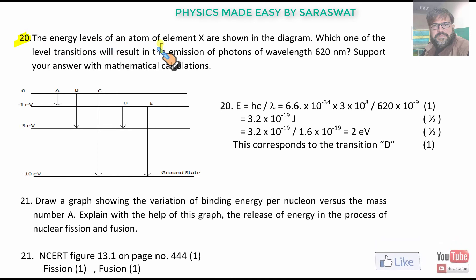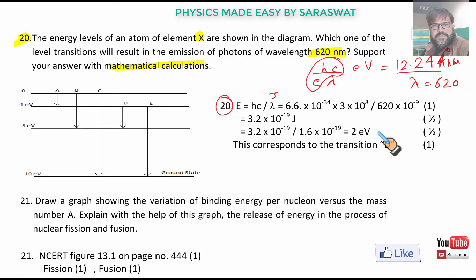Question number 20. The energy level of an atom of element X are shown. Which of the level transitions will result in the emission of photons of wavelength 620 nanometer. Support your answer with mathematical calculations. Energy is hc/λ in joules. That is hc/λE in electron volt directly. You can calculate this much, which comes out to be 12.24 angstrom or nanometer upon λ. We divide λ, λ is 620. So, it comes out to be 2 electron volts.